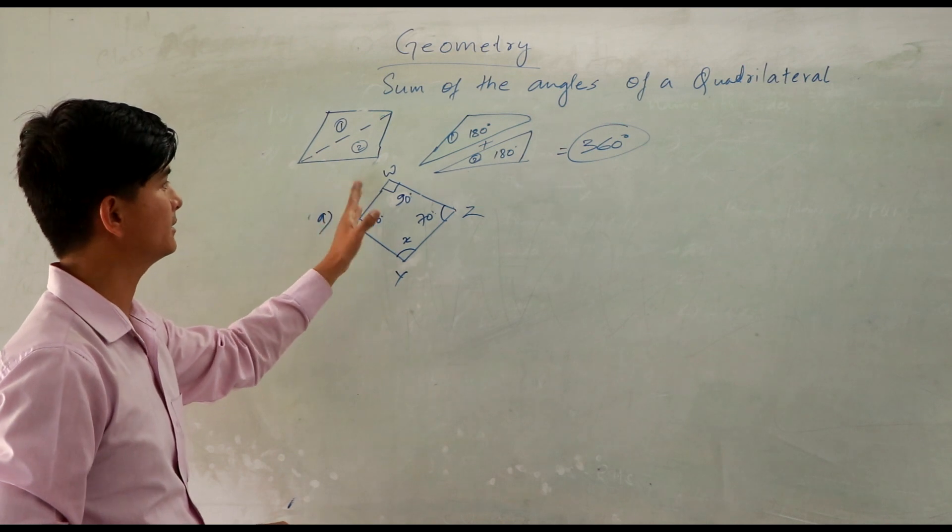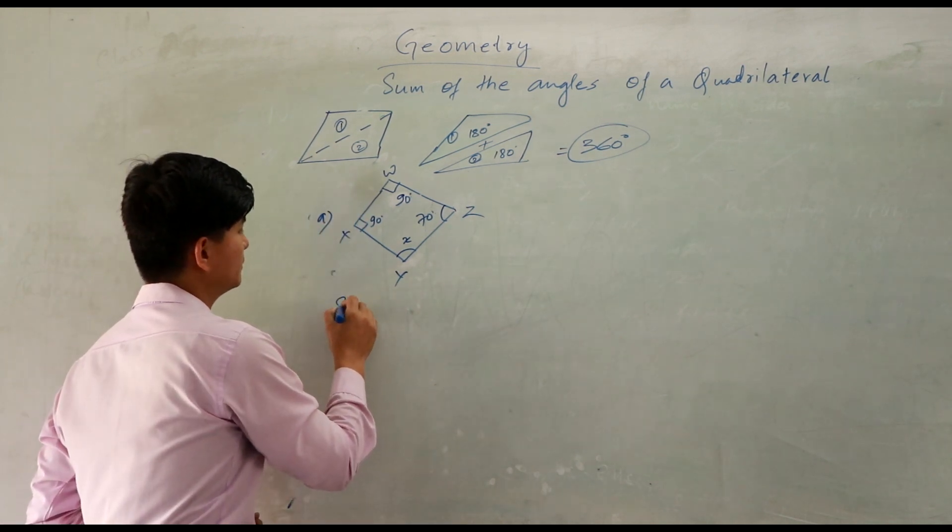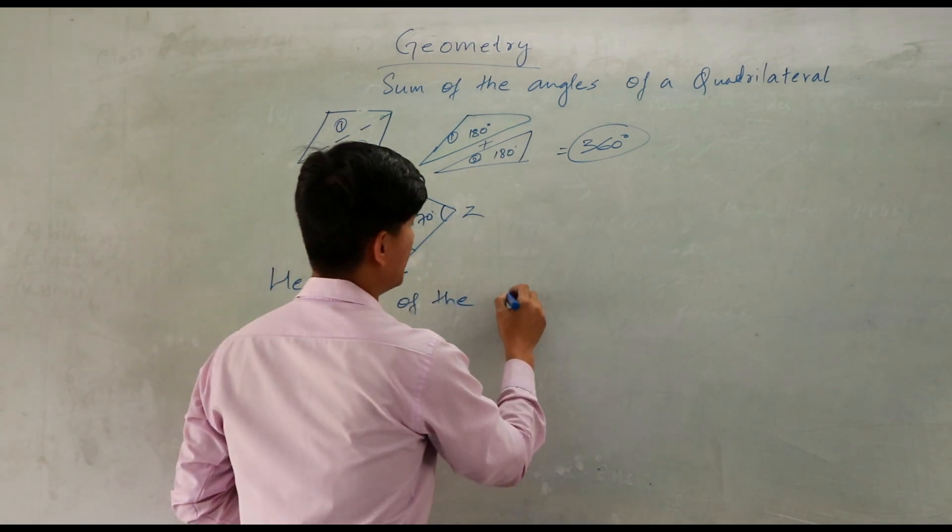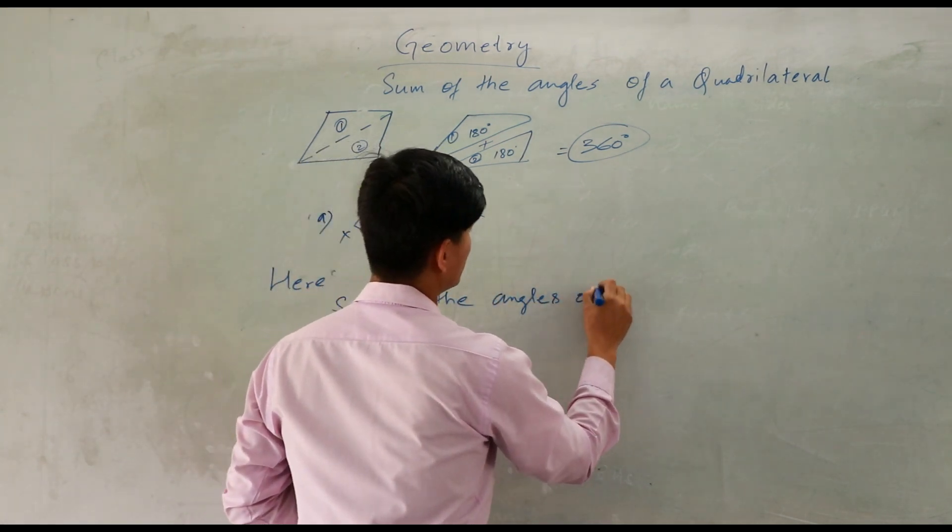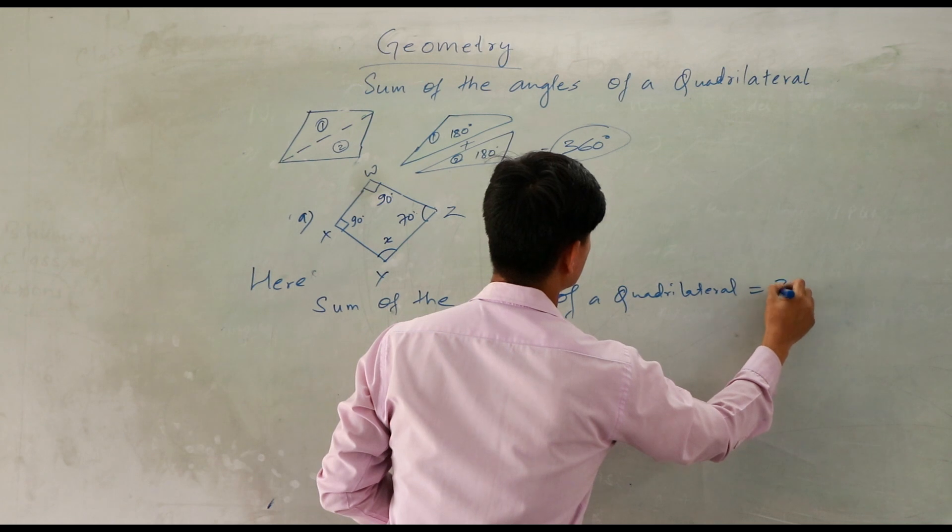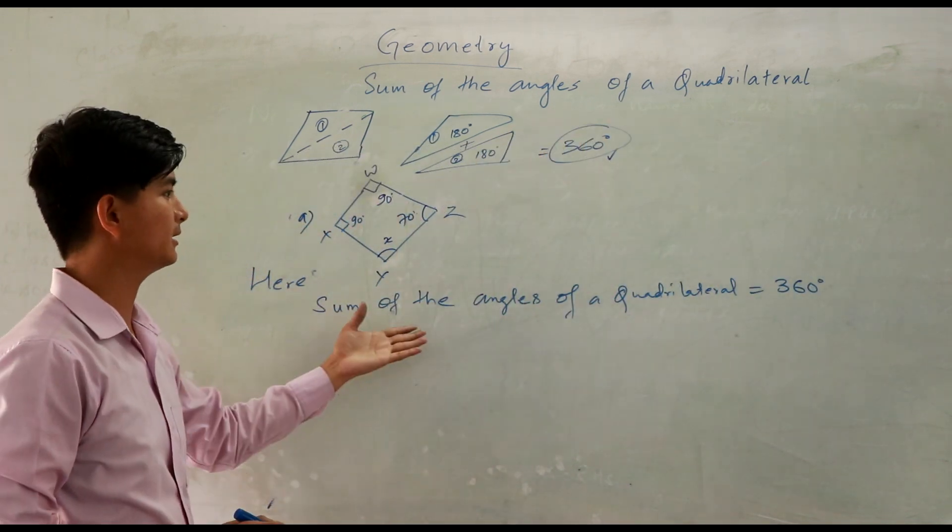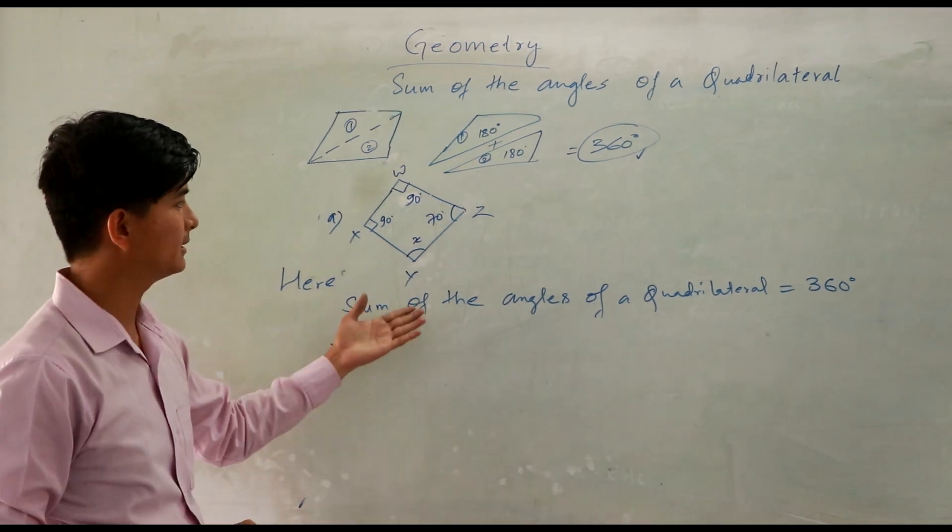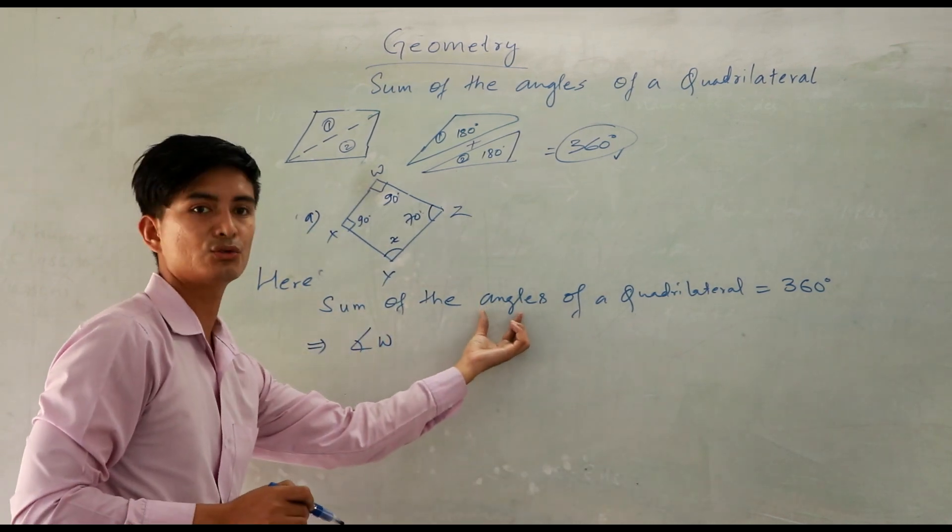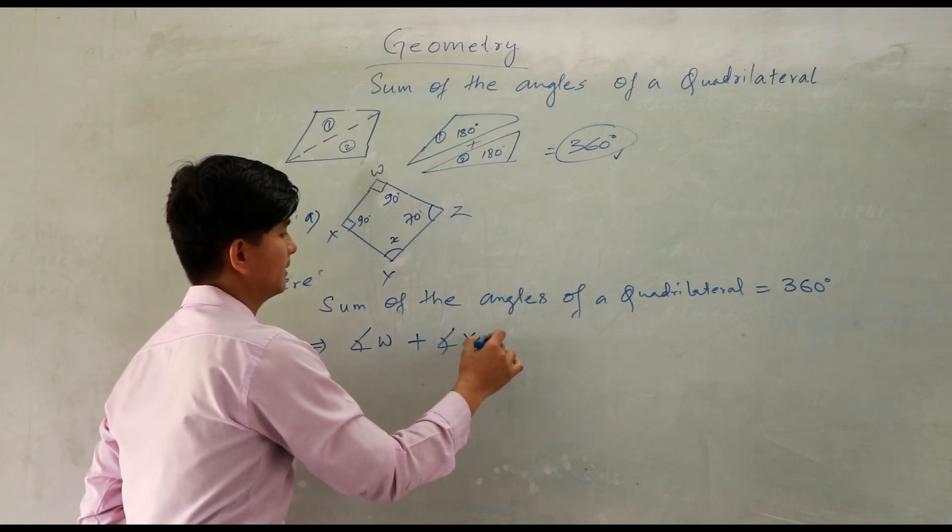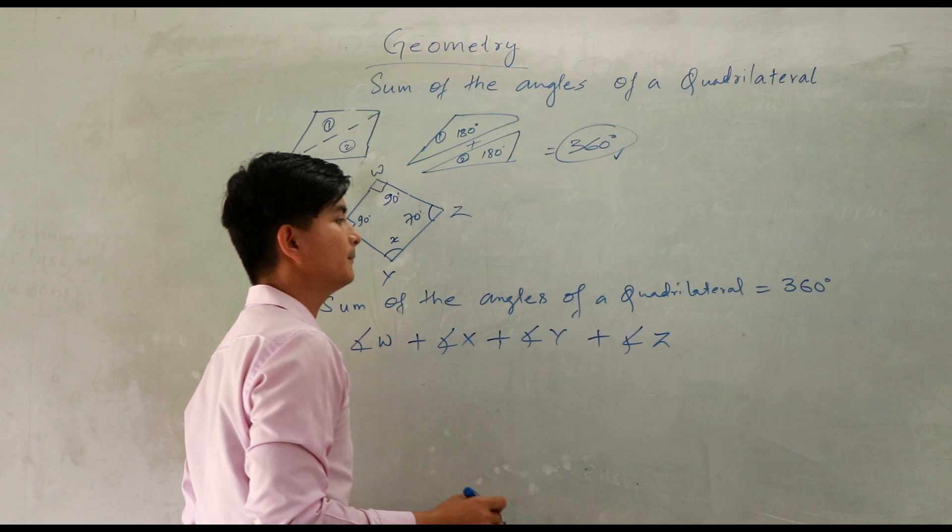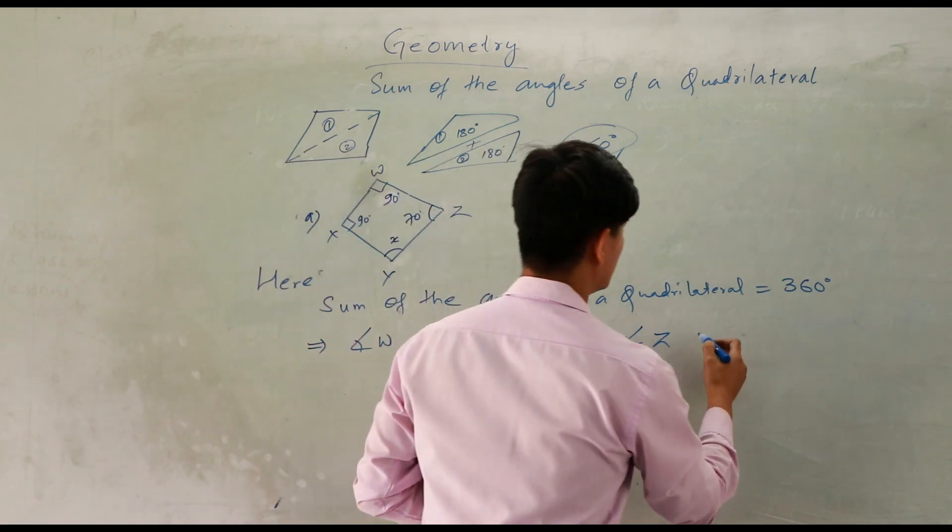So we have to find this missing angle X. Let's see how to find this. I will give the names: W, X, Y, Z. The angles of the quadrilateral are W, X, Y, Z. Here you can simply write: sum of the angles of a quadrilateral is how much? 360 degrees. With that same formula, we have to find X. So angle W plus angle X plus angle Y plus angle Z equals 360 degrees.